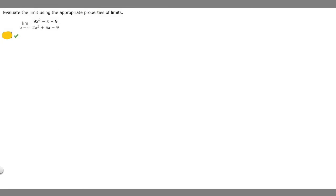So in this problem we're told to evaluate the limit using the appropriate properties of limits. We're given this limit here. The limit as x approaches infinity of 9x squared minus x plus 9 over 2x squared plus 5x minus 9.